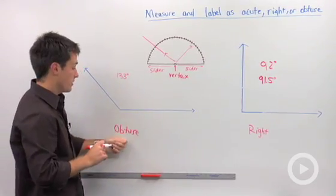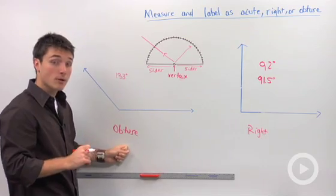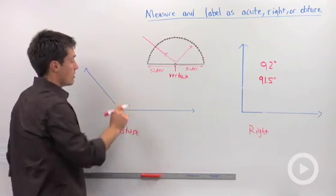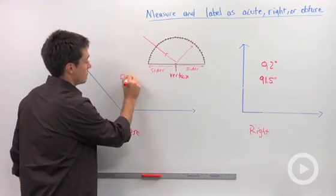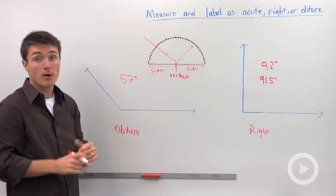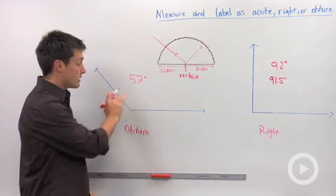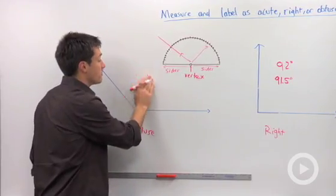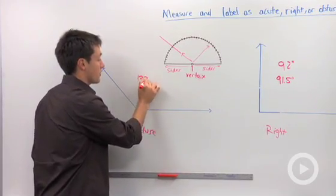If you were shown this problem on a quiz and you said that is 57 degrees, I'm going to say that's wrong. Because although the marking might have been correct, you didn't recognize this as obtuse and this should have been 133 degrees.